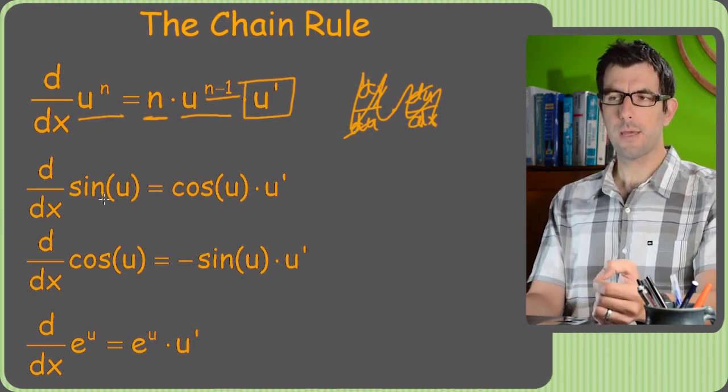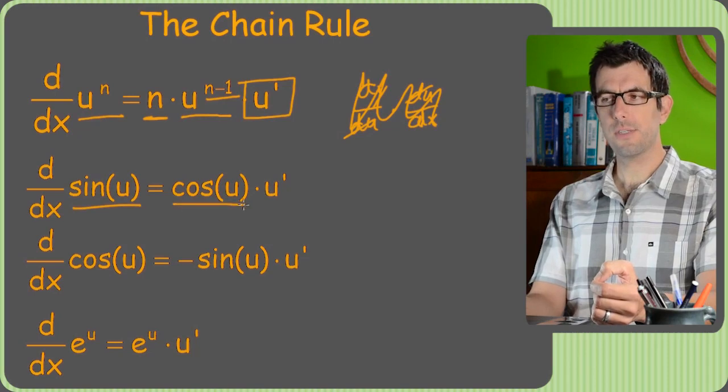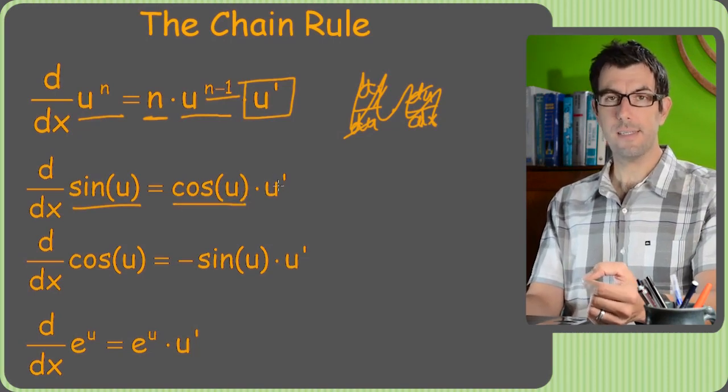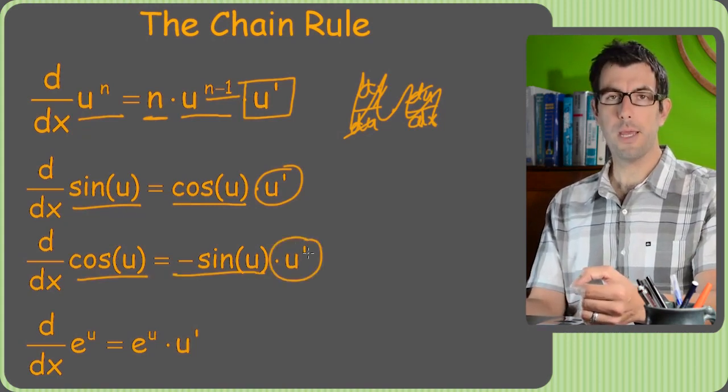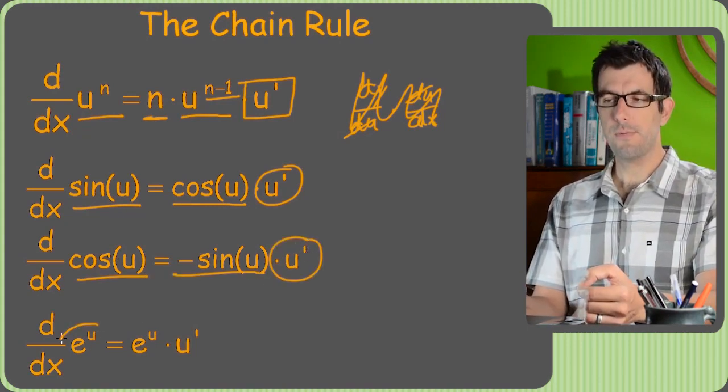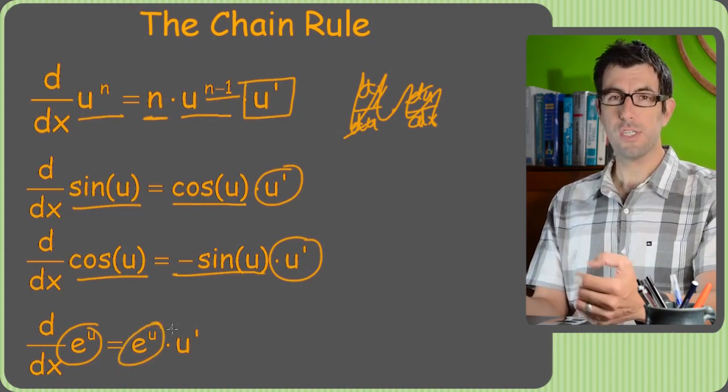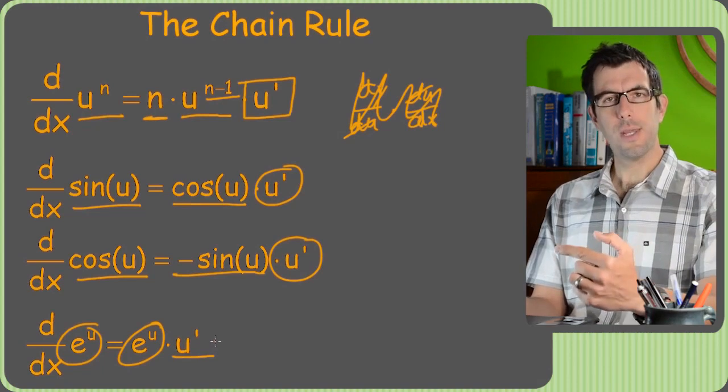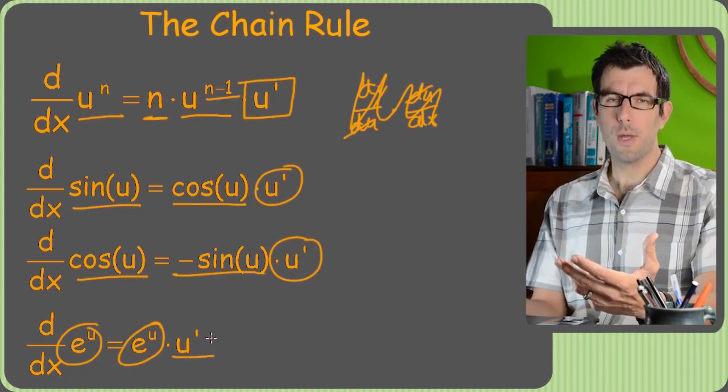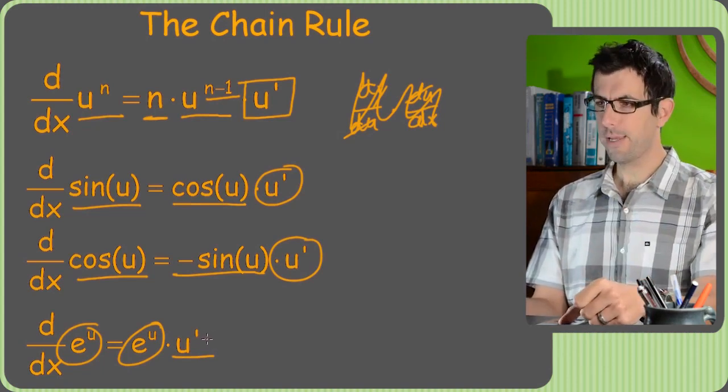Same thing happens with sine and cosine. Derivative of sine is still cosine. The difference is that we got a u prime on the end. Cosine same deal, got a u prime on the end. And then of course e to the u, once again its derivative is just itself but we've got a u prime on the end. So now let's take a look at what is u and what is that u prime we're gonna end up with.